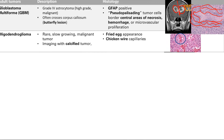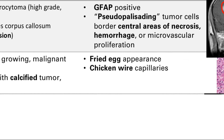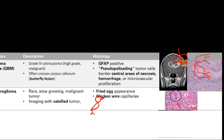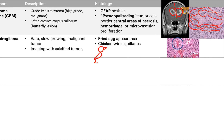The easiest way to remember this is chicken and eggs. So this is our big oligodendroglioma — the O for oligodendrocyte — and then we get a little chicken here. Very easy to remember: we have a chicken for the oligodendrogliomas.